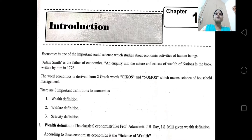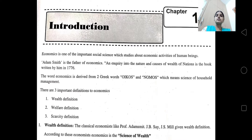Dear students, you all know that there are two types of sciences. One is social science and the other one is natural science. The subjects like physics, chemistry, biology — all these are called natural sciences and we usually study them under the science stream. The subjects like history, economics, political science, sociology, geography, and psychology are all called social sciences, and we usually study them in arts and commerce.